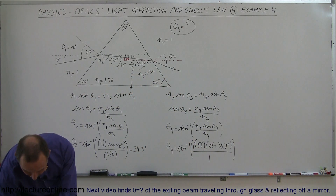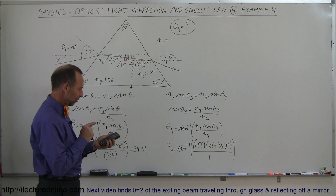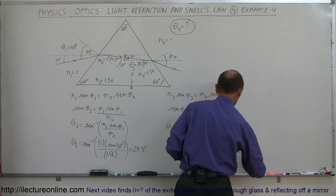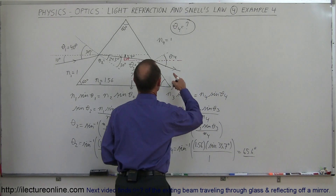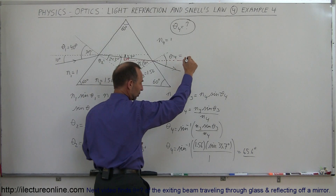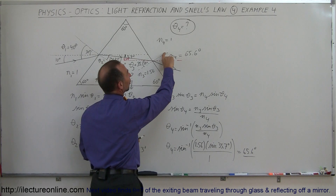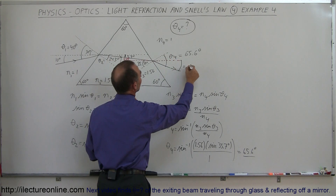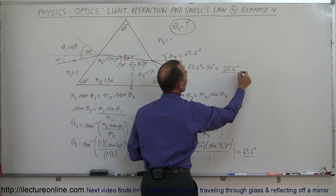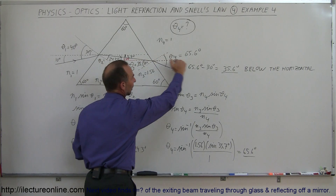Plugging in: θ₄ equals arc sine of 1.56 times sine of 35.7 degrees, divided by 1. Taking sine of 35.7 degrees, times 1.56, gives 0.91. Taking the arc sine of that gives 65.6 degrees. That's relative to the normal of the prism surface. Since the angle between the normal and the horizontal is 30 degrees, we subtract: 65.6 minus 30 equals 35.6 degrees below the horizontal. That's the direction the exiting beam travels as it leaves the prism.